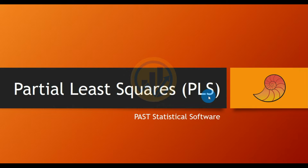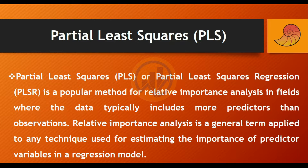Partial Least Square (PLS), or Partial Least Square Regression (PLSR), is a popular method for relative importance analysis in fields where data typically include more predictors than observations. Relative importance analysis is a general term applied to any technique used for estimating the importance of predictor variables in a regression model.